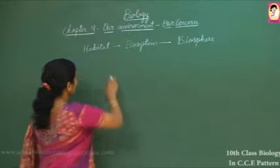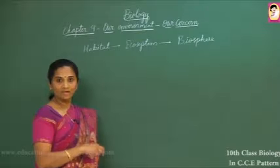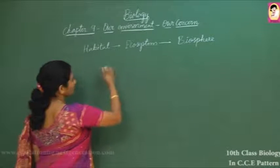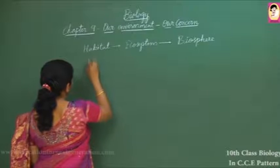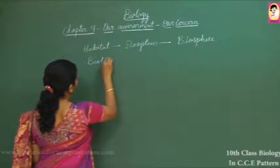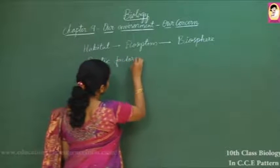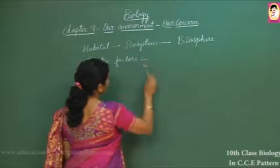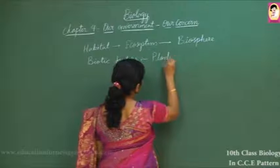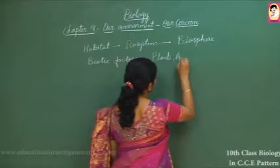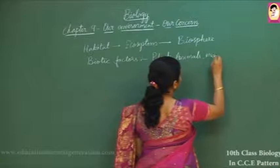In a habitat you can find living and non-living organisms. The living organisms that make up our environment are called biotic factors. Biotic factors include all living organisms — plants, animals, and microorganisms.